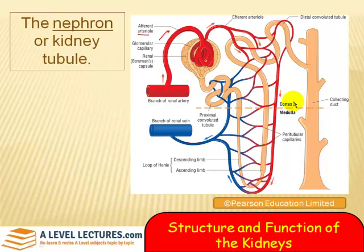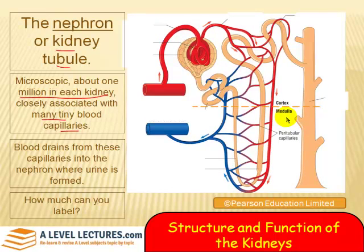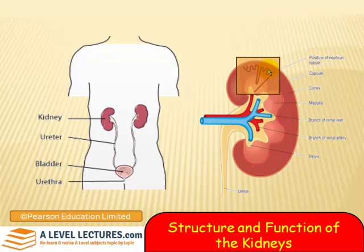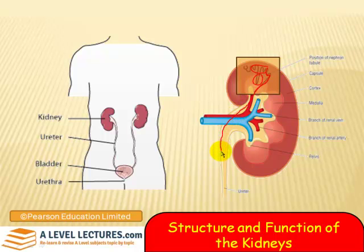Notice that this part — the glomerulus, PCT, and DCT — sits in the cortex, while the loop of Henle dips down into the medulla. Eventually everything passes down the collecting duct and out into the ureter, then from the ureter to the bladder.